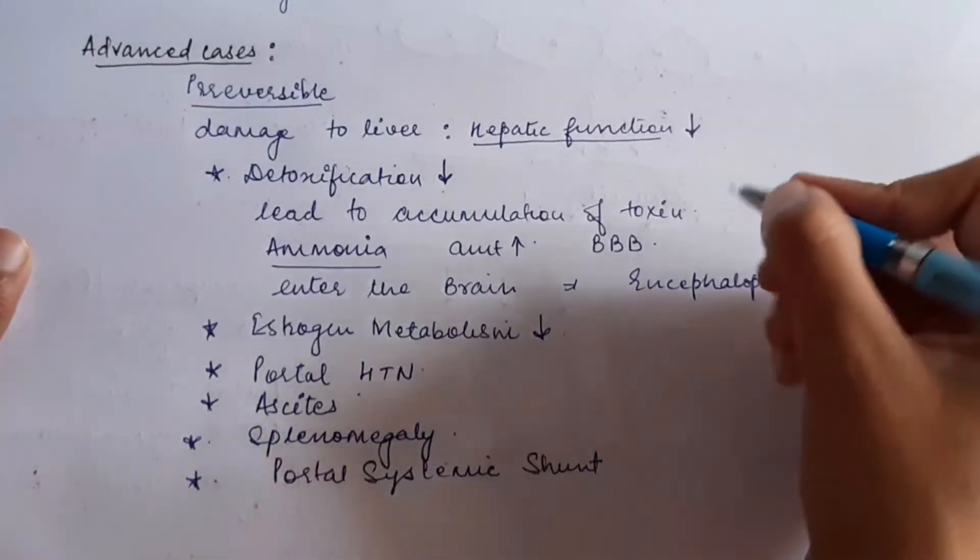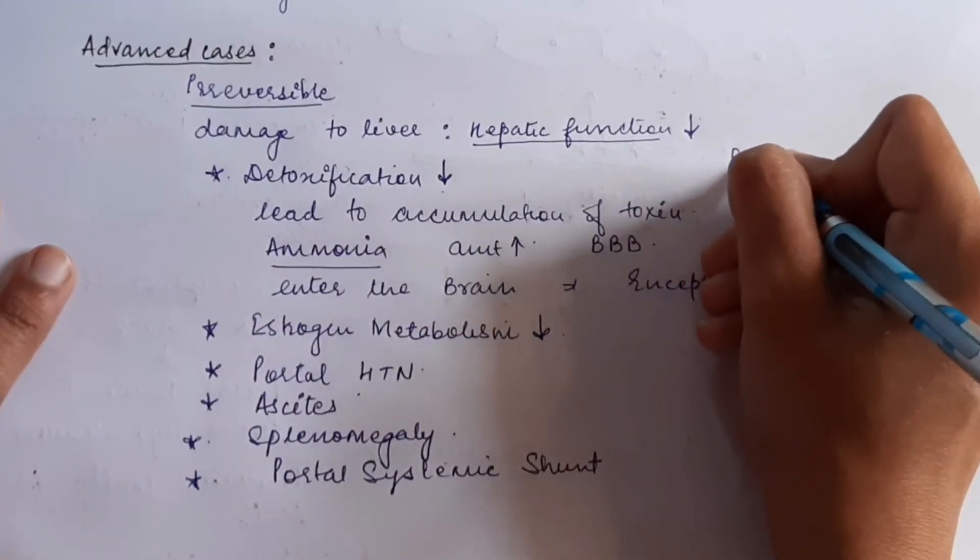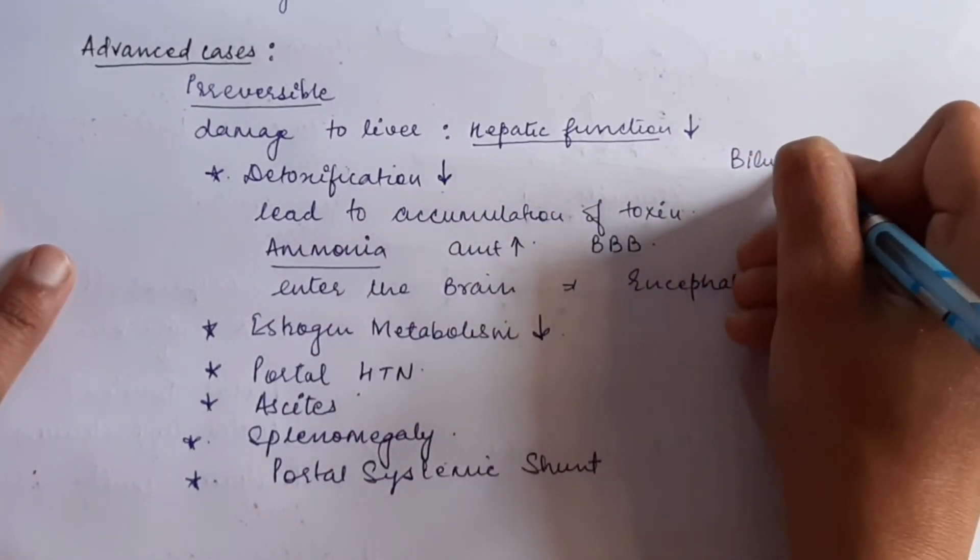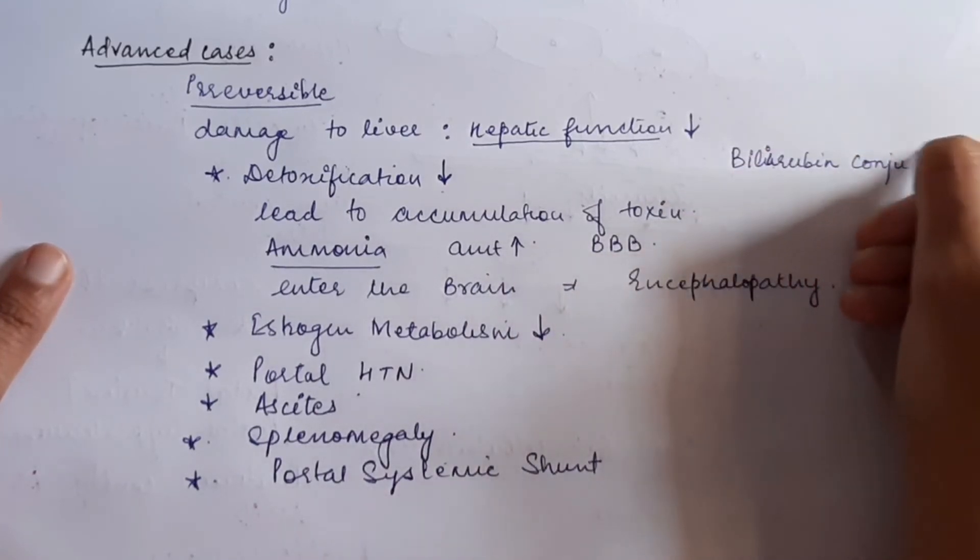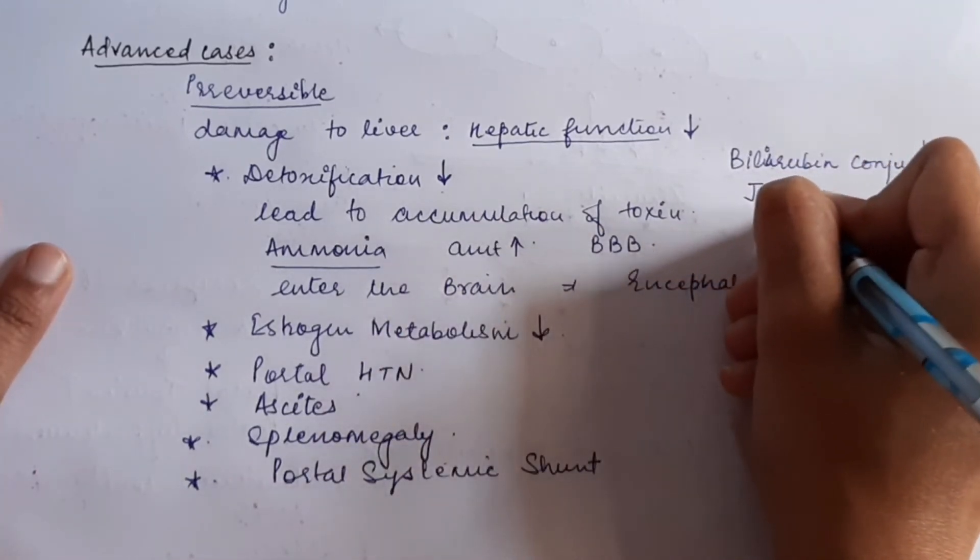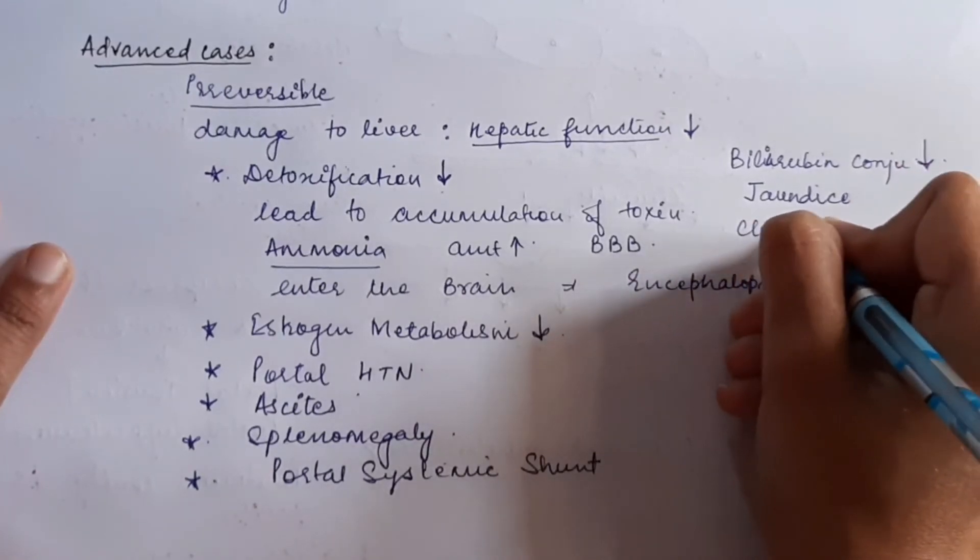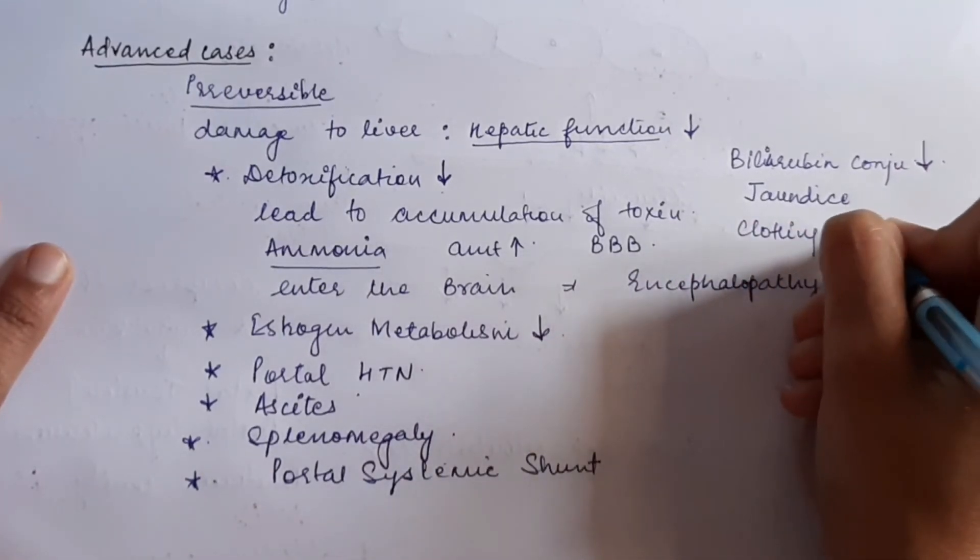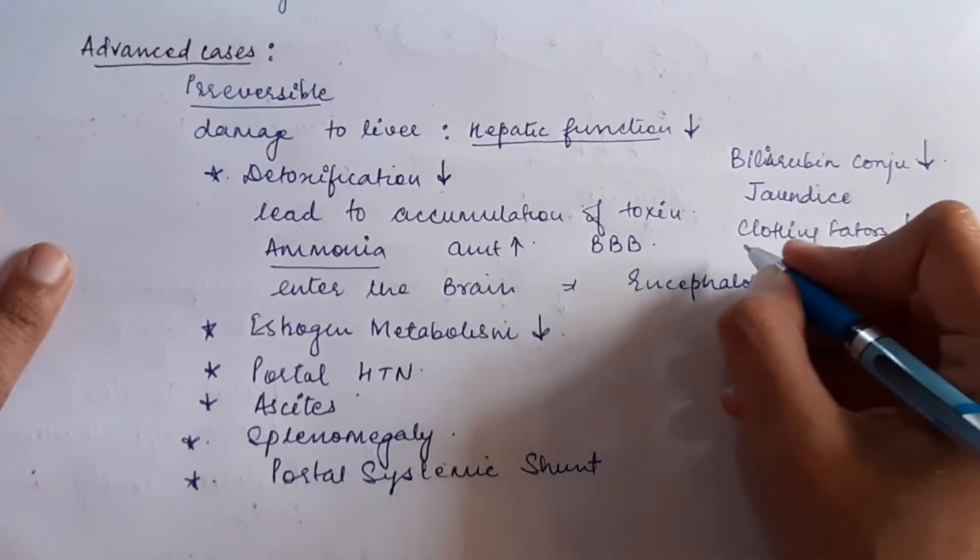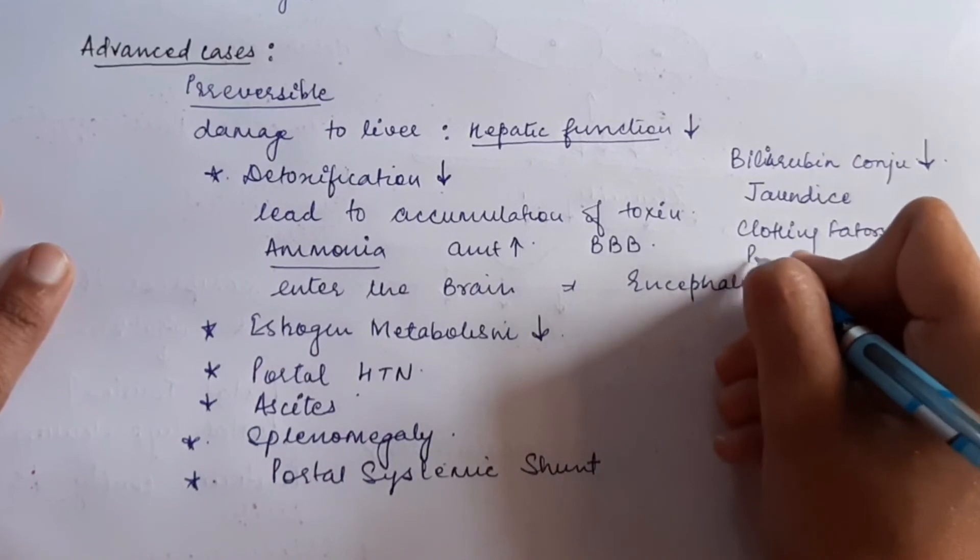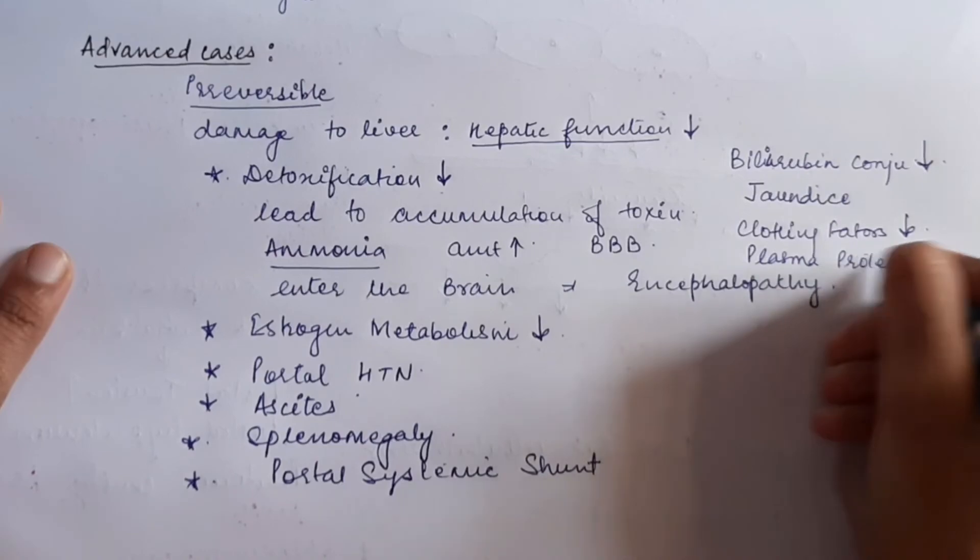We can also see, because of decreased liver function, the bilirubin conjugation will be disturbed. It can lead to jaundice. Certain clotting factors will be decreased, causing small hemorrhages. Plasma proteins synthesized in the liver are also decreased, like albumin.